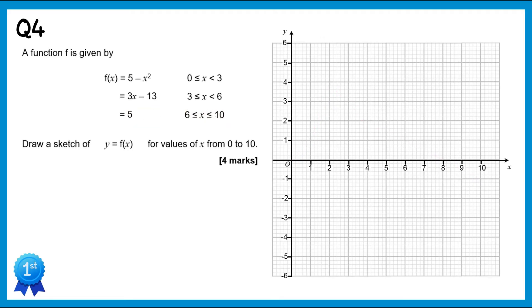For this function we start with 5 minus x squared for x values from 0 to 3. At x=0 we get 5, at x=1 we get 4, at x=2 we get 1, and at x=3 we get negative 4. We join them up with a nice smooth curve and move on to the next section.